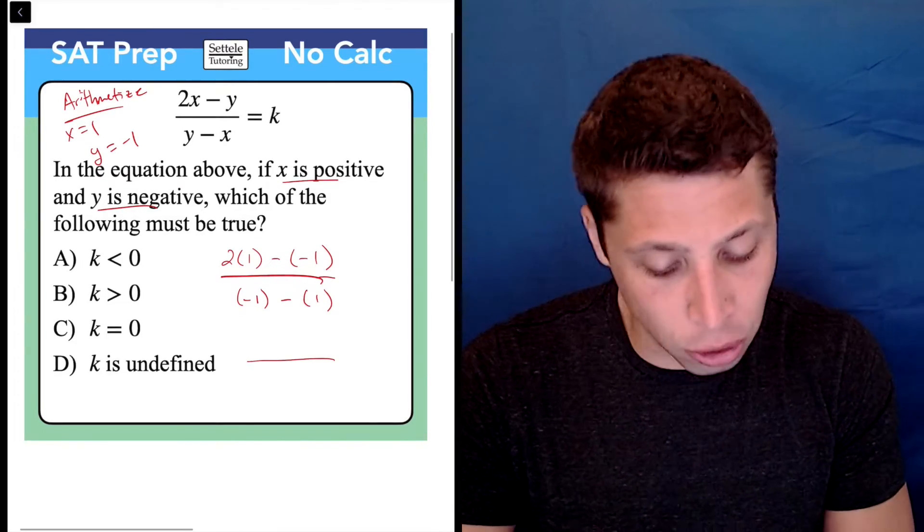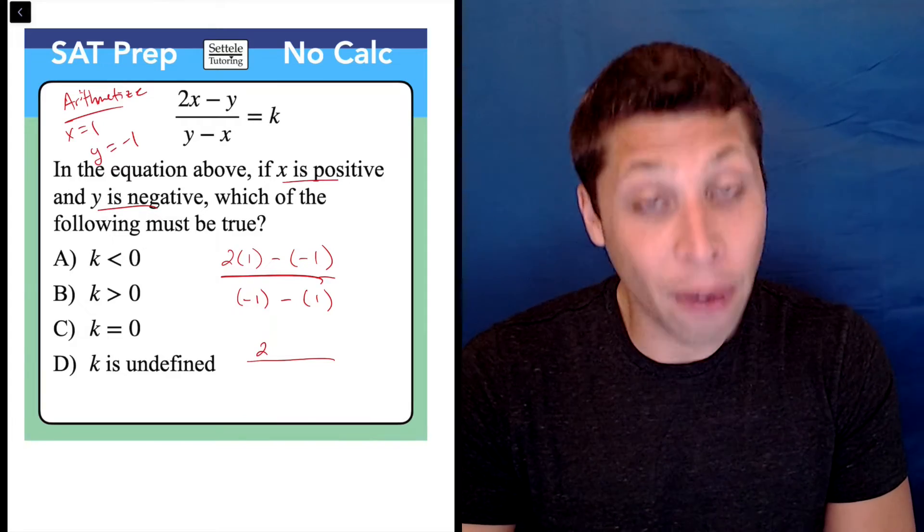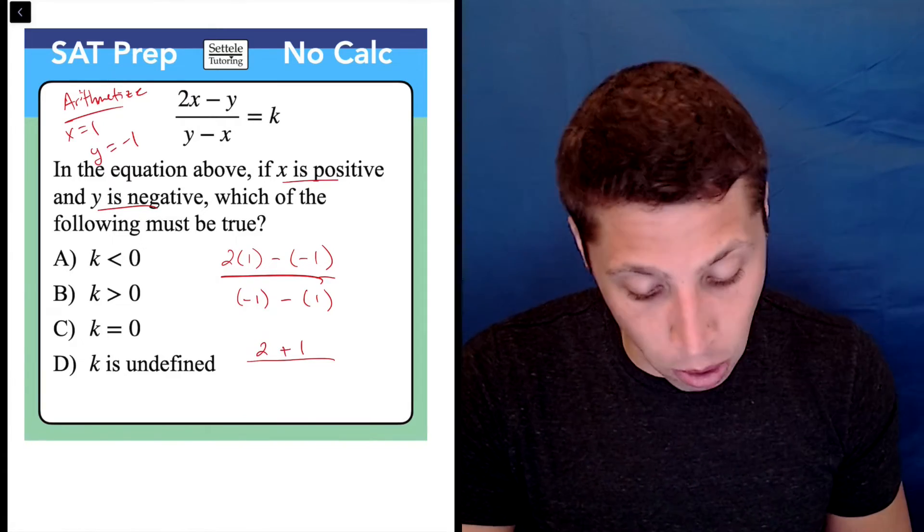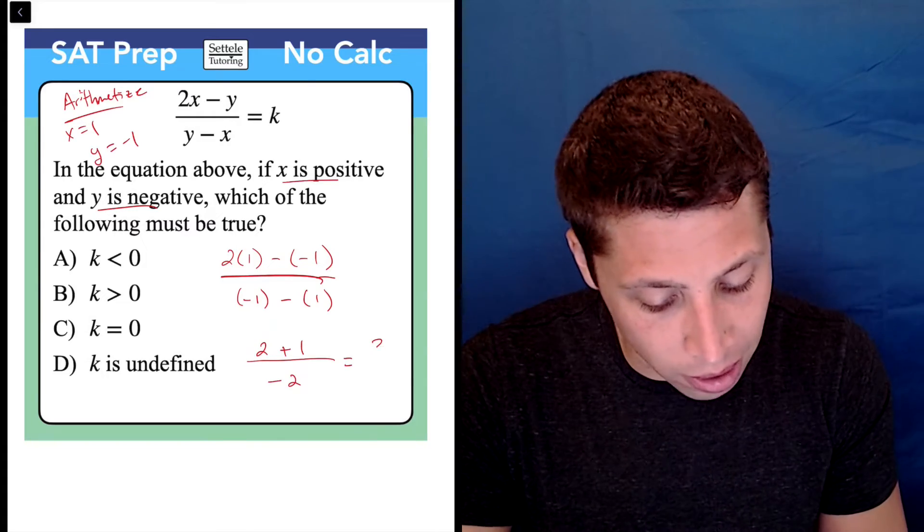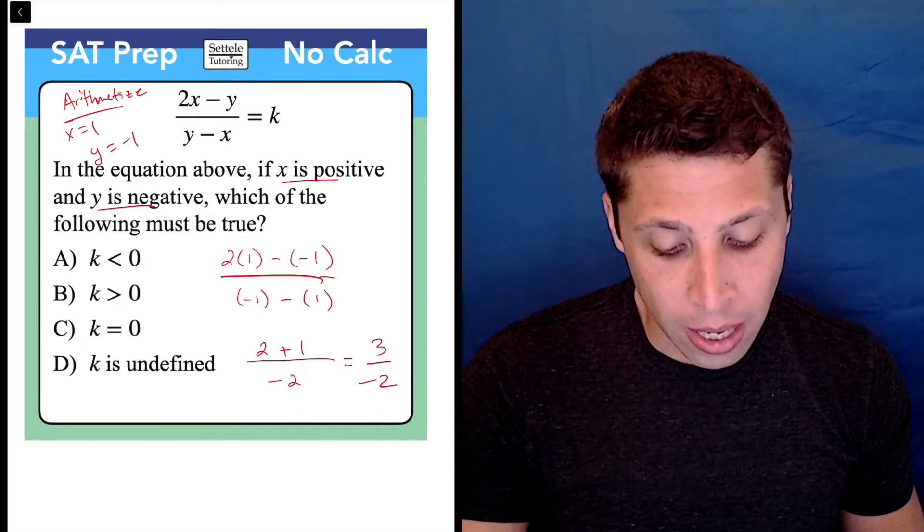So what's happening? Well, okay, on the top, we've got two times one is two. Now, negative negative is going to be plus one. And on the bottom, negative one minus one is negative two. So this is three over negative two.